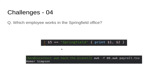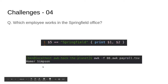Pretty straightforward — you were probably guessing something exactly like this. The fifth column is our office name. This time we're not using regular expressions — I just wanted to show a variety of different ways to approach this. We're looking for the literal string Springfield. If that matches the fifth column, we print out two columns — dollar sign one, dollar sign two. Remember, the comma here is argument separation, not string concatenation. Homer Simpson is the only employee in the Springfield office.